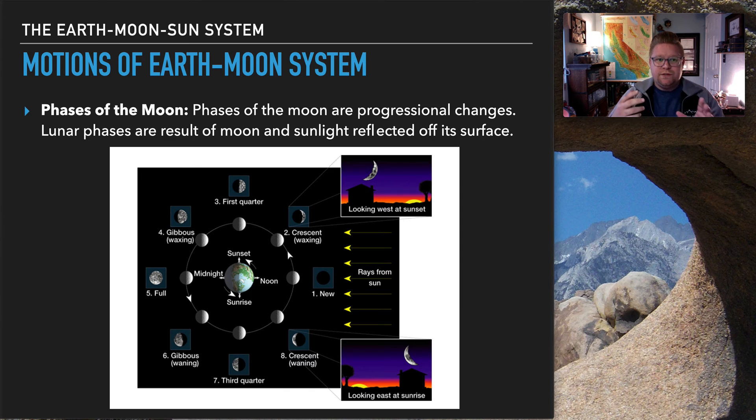Moving into the motions of Earth and Moon systems, I wanted to bring into the idea and into the discussion about looking at the Moon phases. So in this diagram, I'm able to kind of express that. So we see phases of the Moon. The phases of the Moon are progressional changes. Lunar phases are the result of the Moon and sunlight reflected off of its surface. So what we can see is, this represents the Earth, obviously. This is the Moon throughout the course of its cycle. And then here are the rays from the Sun.